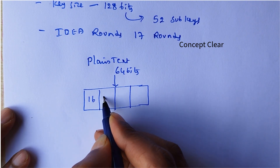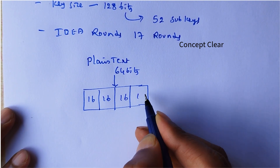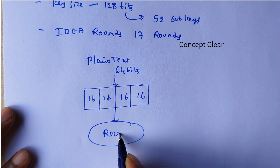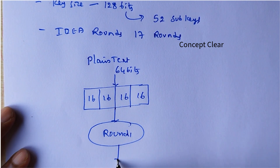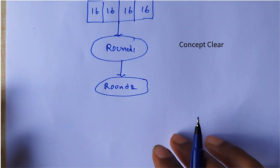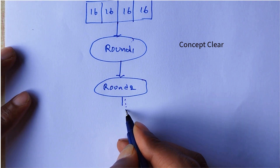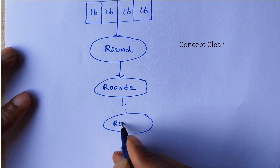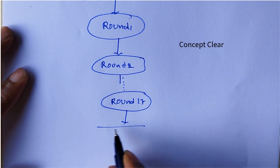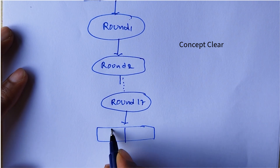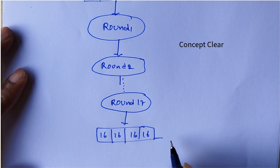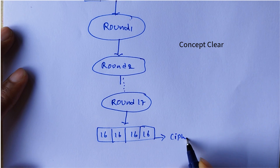The 4 subparts are 16, 16, 16, 16 bits. This is the left side part, and it will be applied to round 1 operation, then round 2 operation, and up to round 17 operation. After round 17, we will get again 4 subparts of 16 bits each — that is the ciphertext.